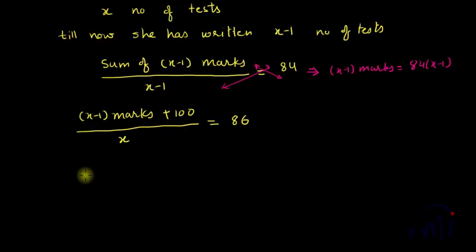the second equation can be written as 84 multiplied by X minus 1 plus 100 divided by X is equal to 86. And here also,